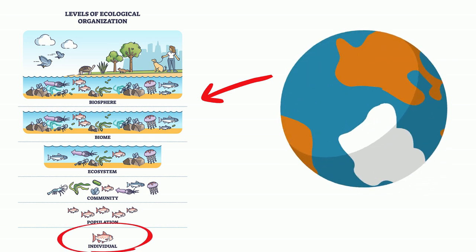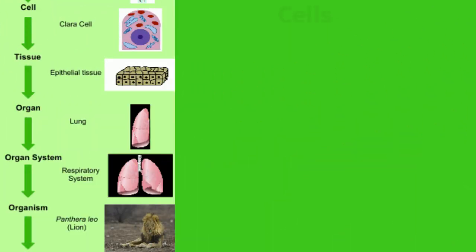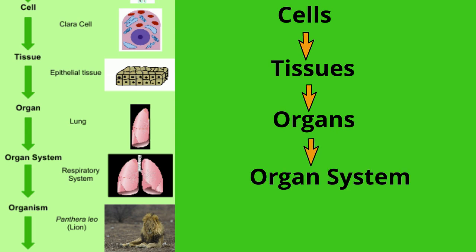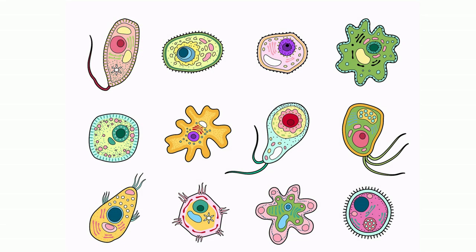An organism can be made up of cells, which make tissues, which may make organs, which make up an organ system, and which all may combine to make an organism. Life is so varied on Earth that some living organisms do not have tissues or organs.